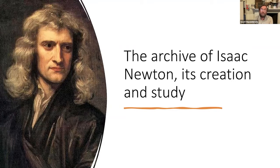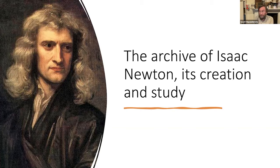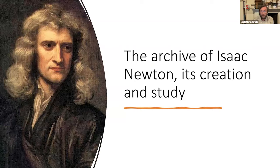Isaac Newton was born in 1642 and died in 1727, and he had an active career in a variety of fields from the early 1660s until his death. Over that period, he wrote more and more and also preserved and collected more and more of what he wrote as an archive, although at certain points aspects of his archive were either lost or damaged, for example by fire. We're looking at nearly 70 years of the productive life of an extremely productive individual.